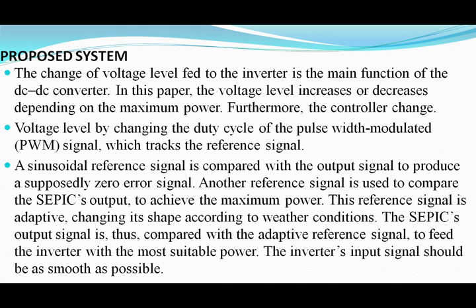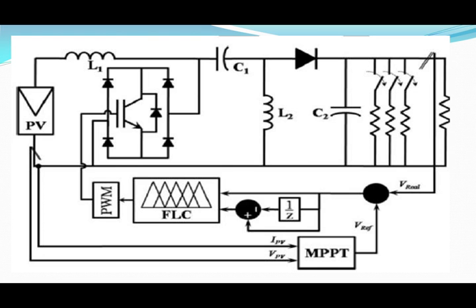Our proposed system changes the voltage level to suit the inverter as the main function of the DC-DC converter. In this work, we develop maximum power tracking — increasing or decreasing power depending on the load. Using the SEPIC converter and FLC controller, we control the duty cycle to increase or decrease the voltage level. By generating the PWM pulse, we take a reference signal as sinusoidal and the output signal as a reference zero signal. That comparison makes a pulse given to the SEPIC converter to convert the voltage as needed. The PWM pulse controls the SEPIC converter output, which is then given to the inverter.